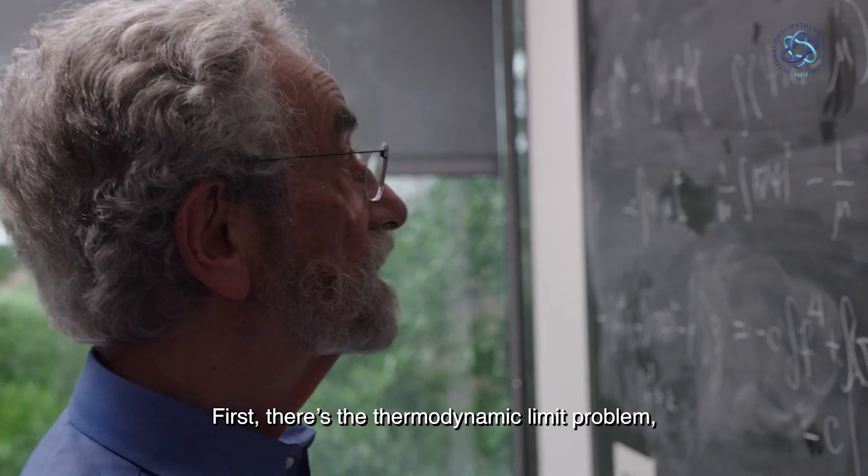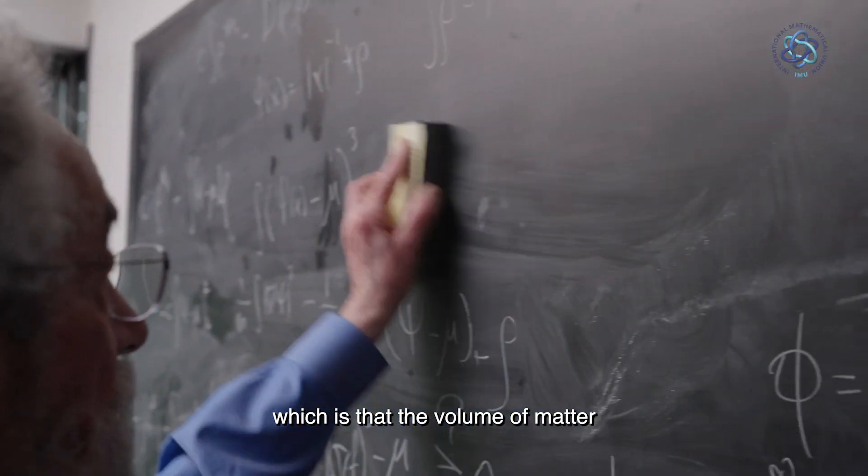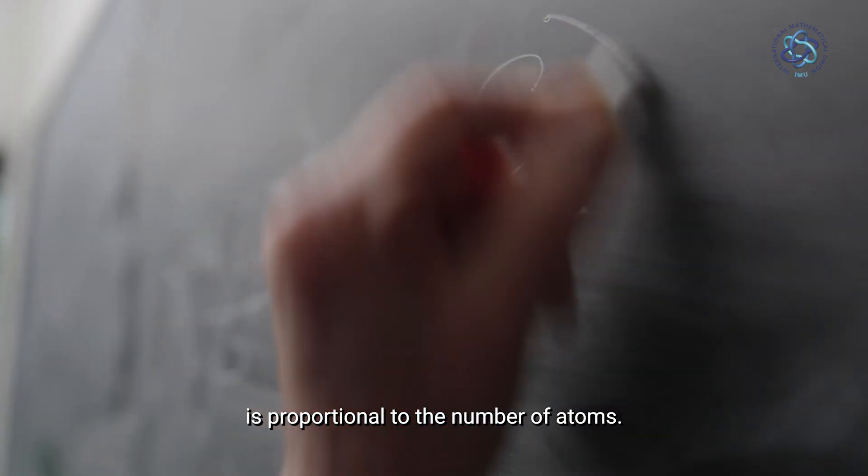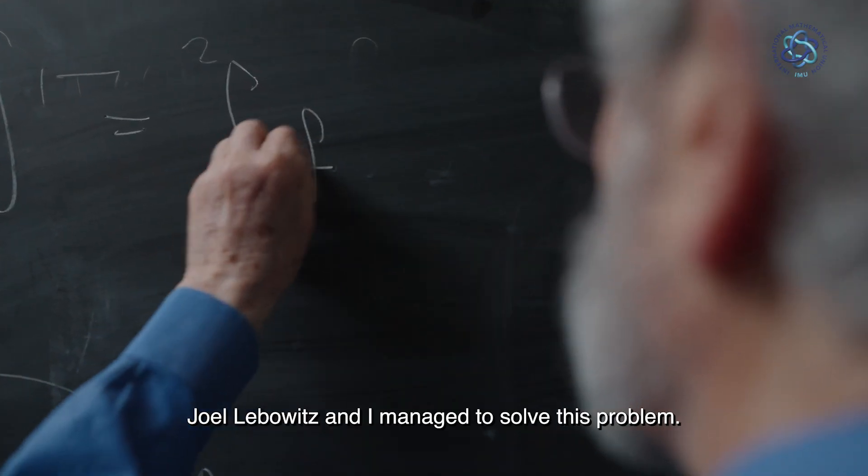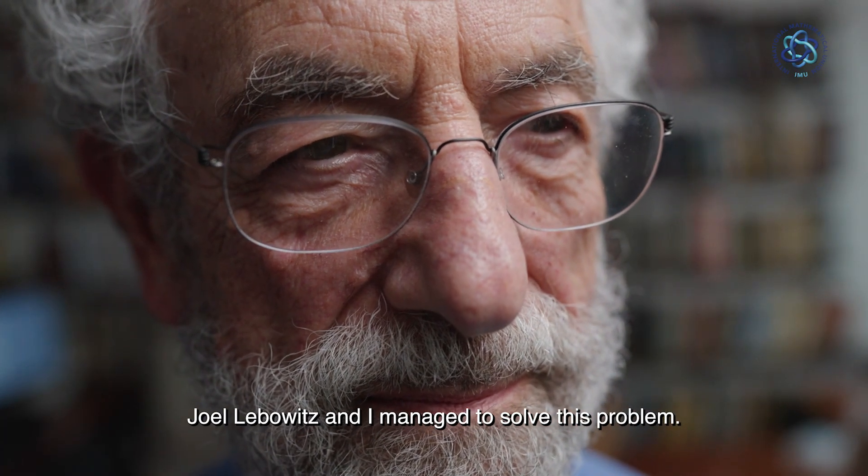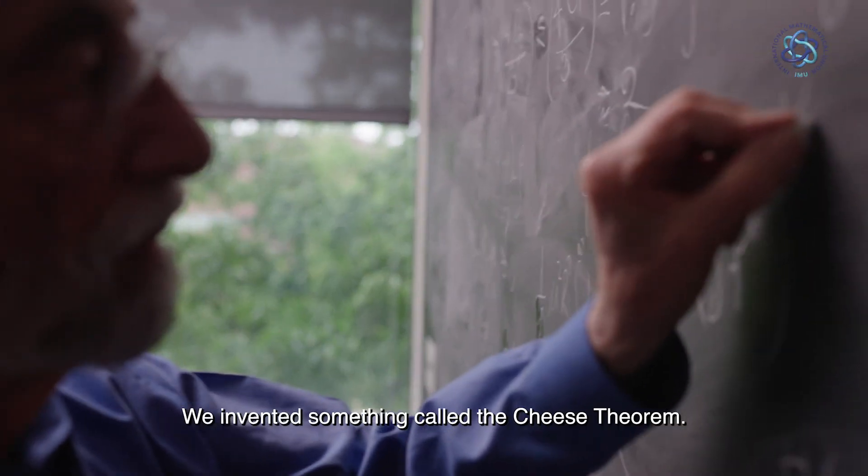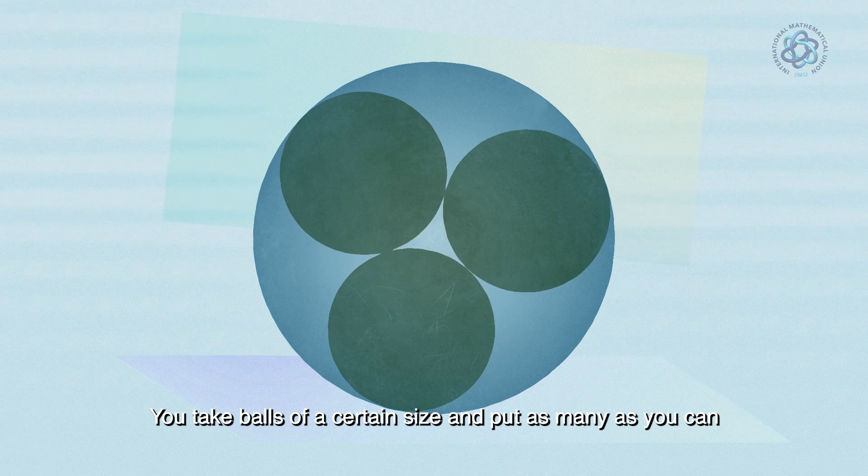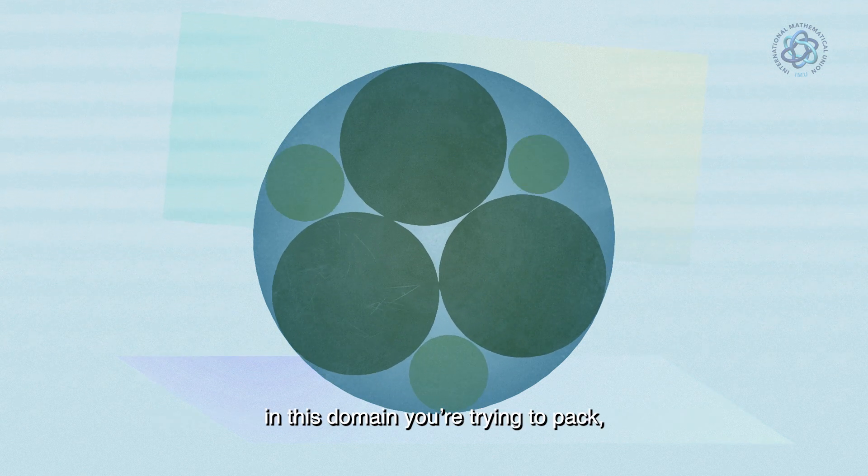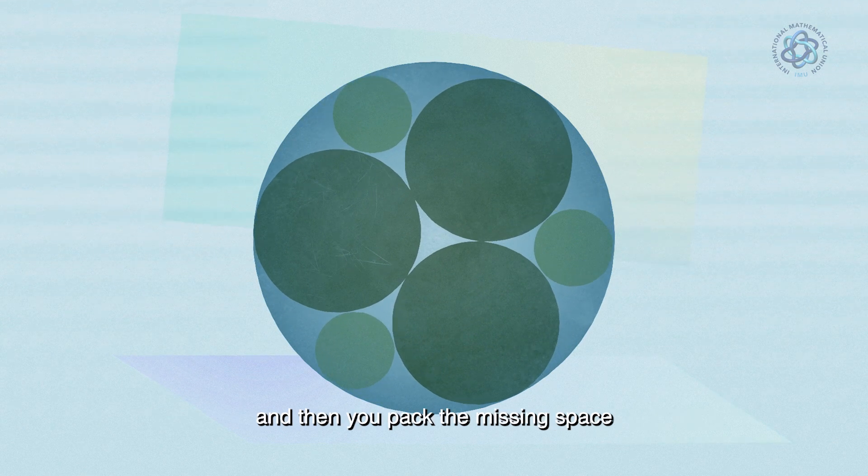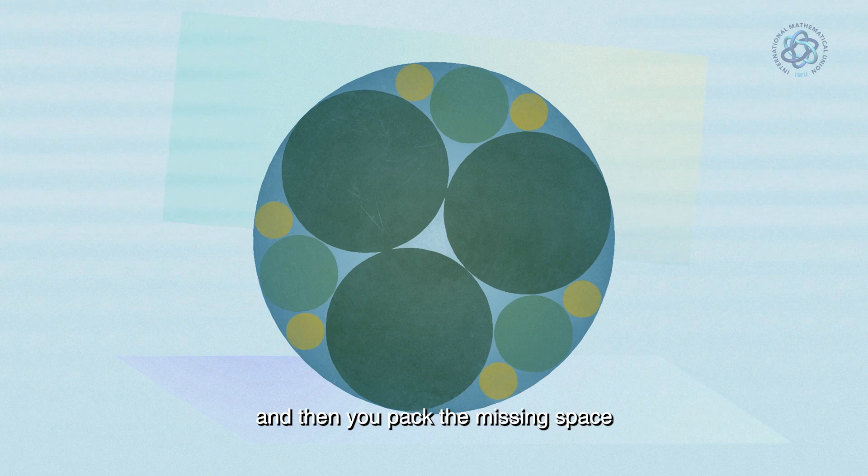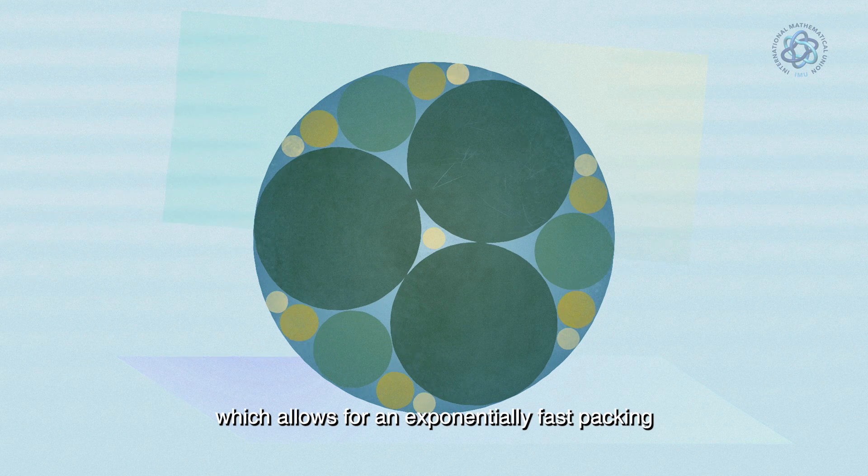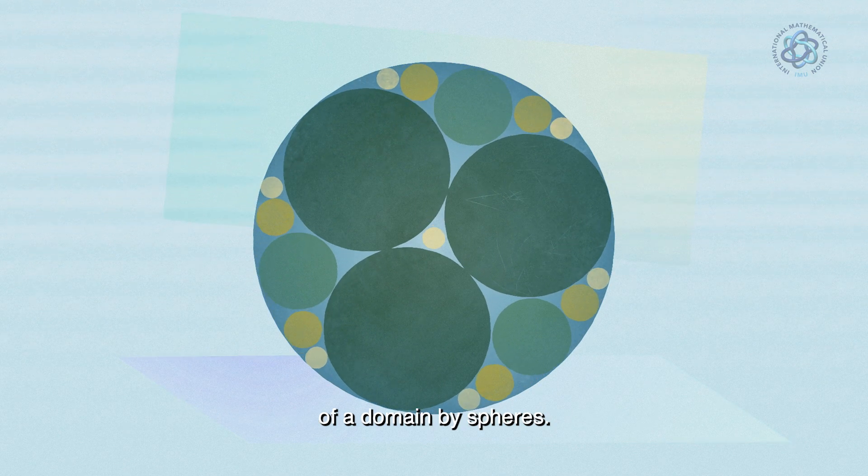First there's the thermodynamic limit problem, which is that the volume of matter is proportional to the number of atoms. Joe Lebowitz and I managed to solve this problem. We invented something called the cheese theorem. You take balls of a certain size and put as many as you can in this domain you're trying to pack. And then you pack the missing space with those smaller balls, which allows for an exponentially fast packing of a domain by spheres.